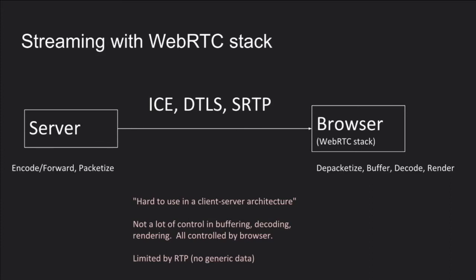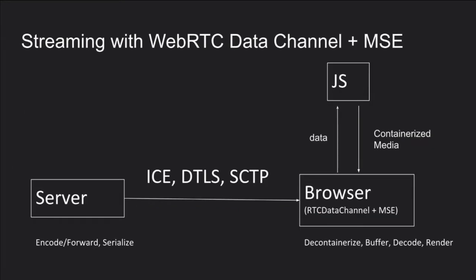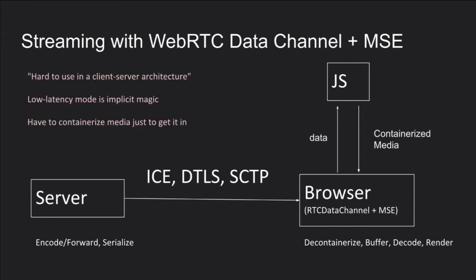This approach has certain downsides. It is hard to use in a client-server architecture, everything is controlled by the browser, and it's based on RTP, which has limitations like no support for generic data. So some people instead use just the WebRTC data channel and send media as generic data over SCTP, then decode it using MSE. This also works with different pros and cons, but it's still hard to use in a client-server architecture and shares many of the WebRTC protocols. Making MSE low-latency is currently implicit magic that only works on some browsers.